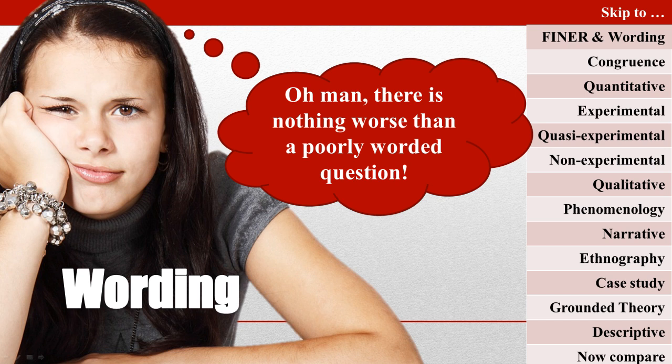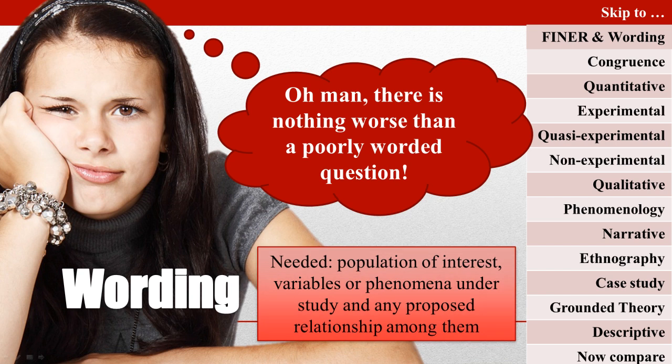The question should contain in one sentence the population of interest, variables or phenomena under study, and any proposed relationship among them. Keep in mind, however, that quantitative and qualitative questions look a little different.